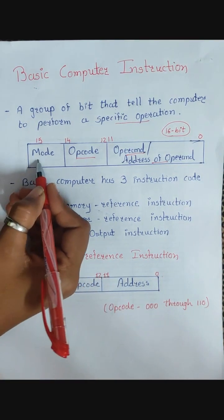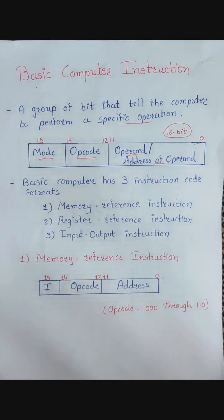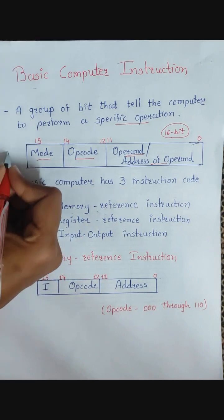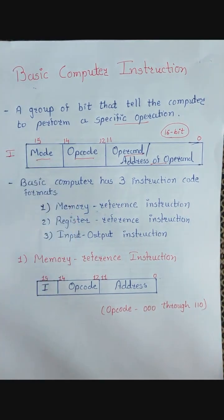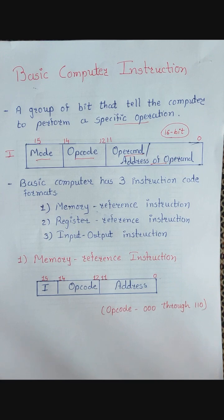And then the last part is mode. Mode is a single bit, referred to as i. If i is equal to 0, that means we are using direct addressing mode. And if i is equal to 1, that means it is an indirect addressing mode. I will discuss direct and indirect addressing mode later.